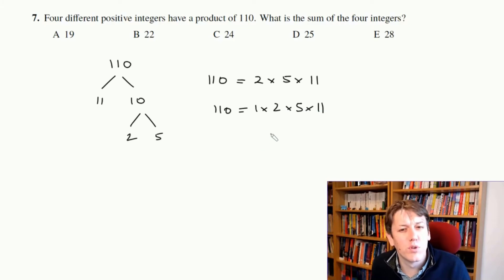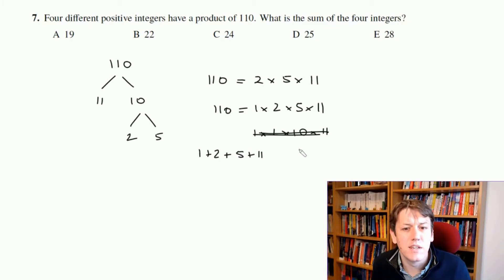Now I can't use 1 more than once, right, so I can't do something like 1 times 1 times 10 times 11 here, because then there wouldn't be different positive integers. So this is the only way we can do it. The numbers must be 1, 2, 5, and 11, and 1 plus 2 plus 5 plus 11 is 19, and so the answer is A, 19.